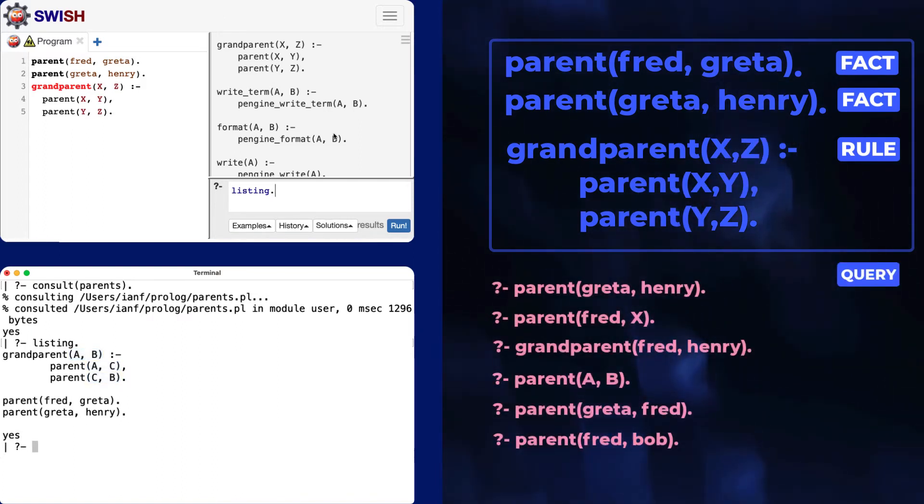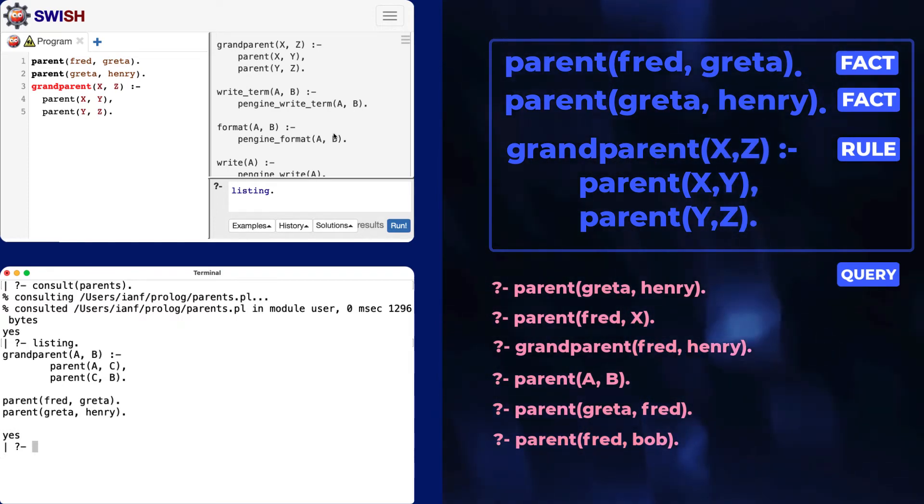Things you type at the prompt are called questions or queries. Try these six queries. Before you hit return, try to predict prologue's responses. Also think what natural language sentences these represent. Maybe pause the video and write down your thoughts.